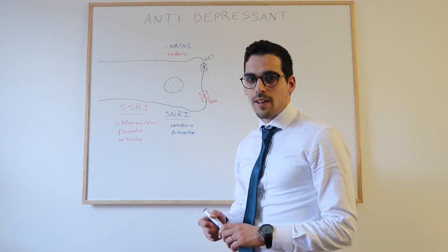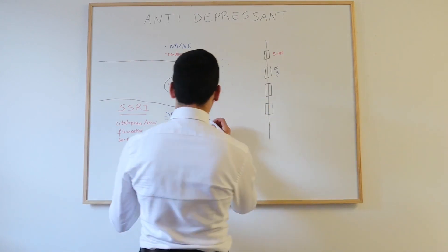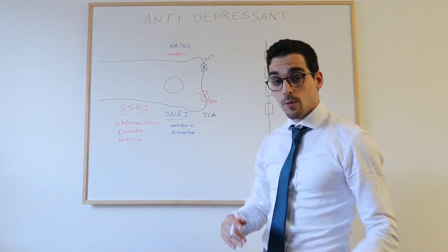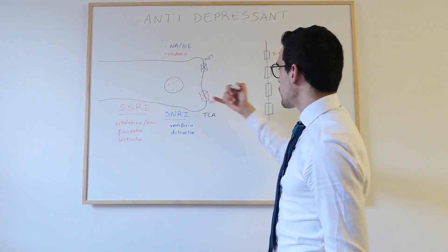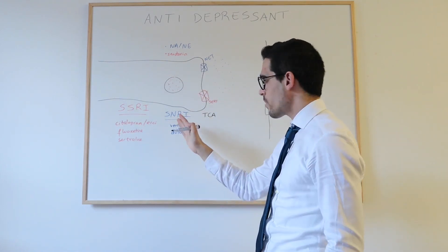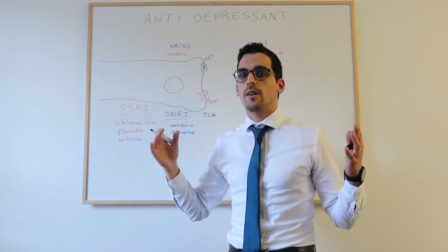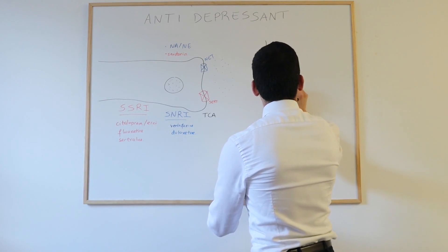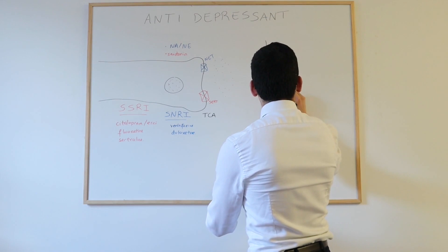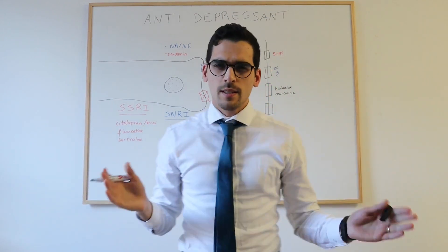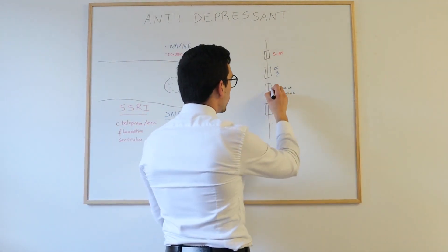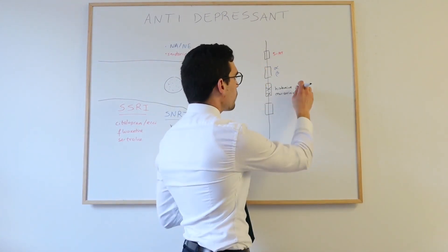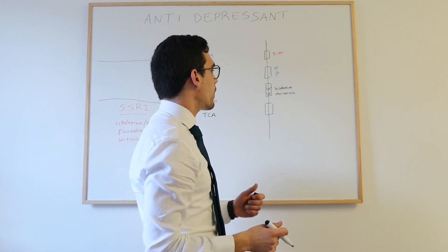The third class is the tricyclic antidepressants, or TCAs. Like SNRIs, TCAs block the reuptake of serotonin and noradrenaline, but they also have effects on other receptors. On the post-synaptic neuron, they block histamine receptors as well as muscarinic receptors, which leads to additional side effects.